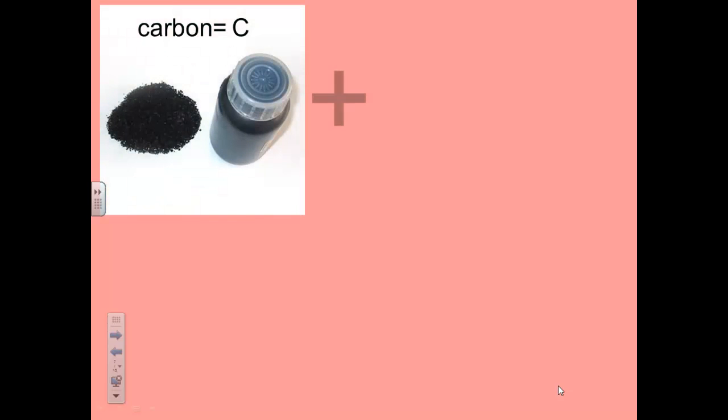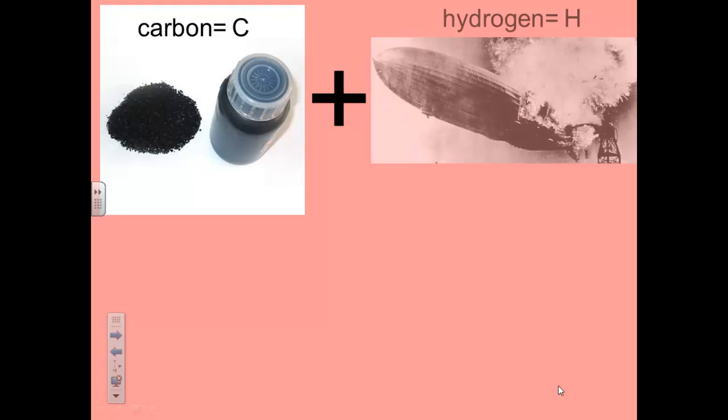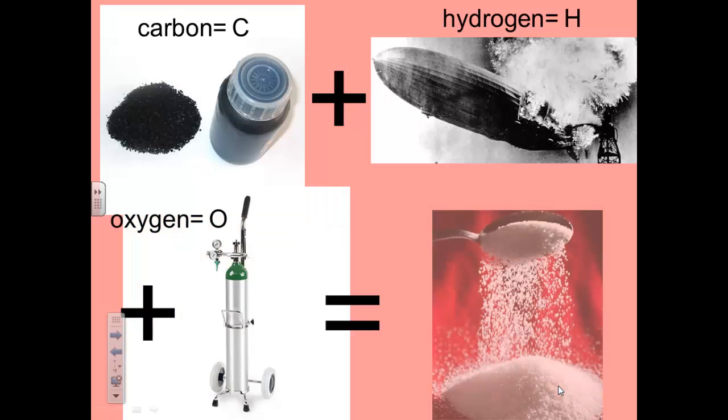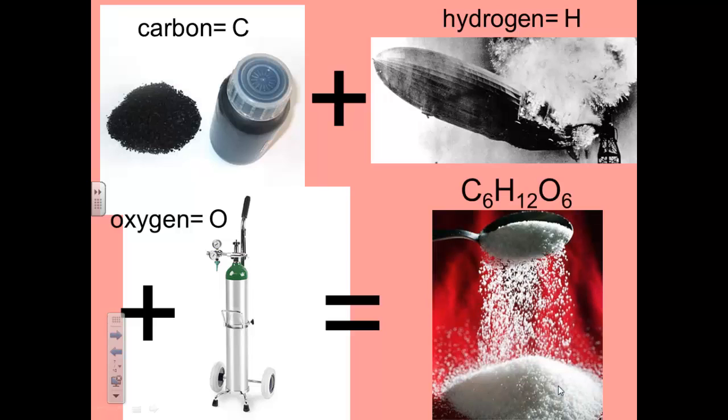This is another example of a compound. When you mix carbon with hydrogen gas and oxygen gas, you get sugar. Here is the chemical formula of table sugar, C6H12O6.